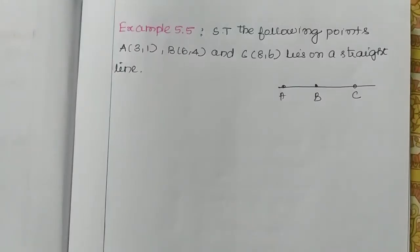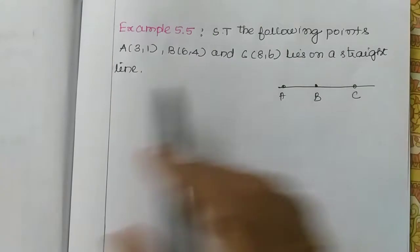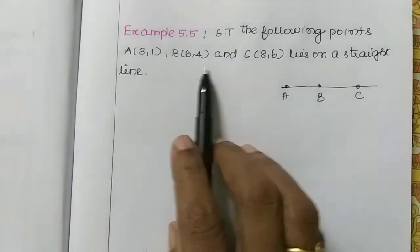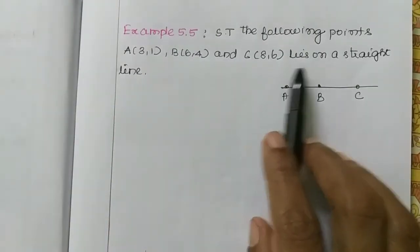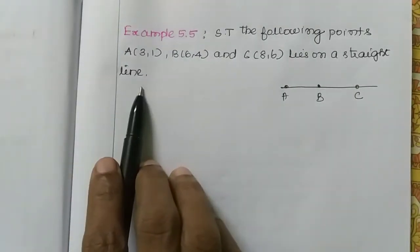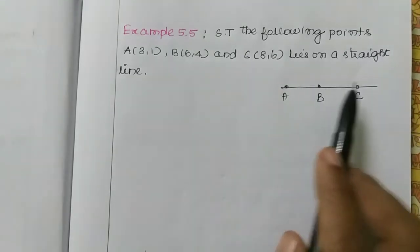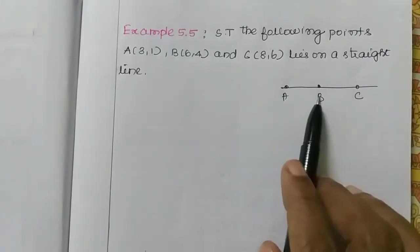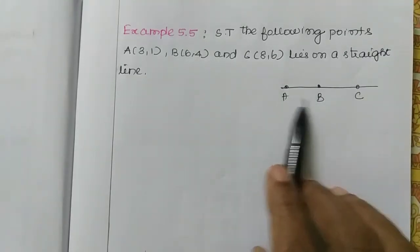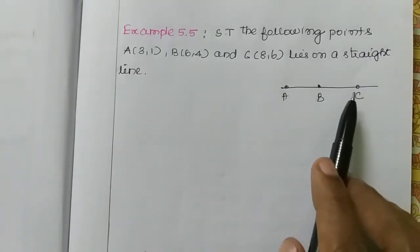Hi students, in this video we will see example 5.5: show that the following points A, B, and C lie on the same straight line. So we need to prove that A, B, C lie on a straight line.